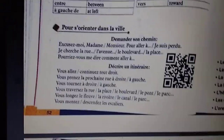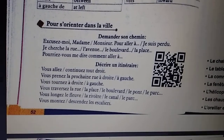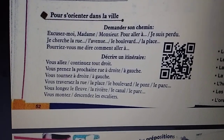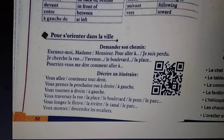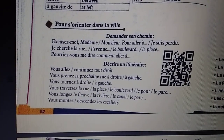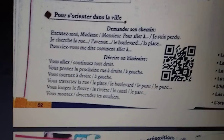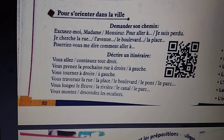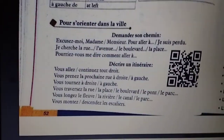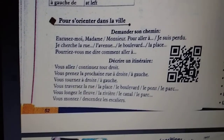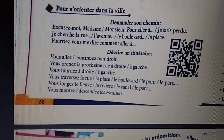This is the next part after the prepositions — how to ask for directions if you are going somewhere and don't know the way. How will you ask in French? Excusez-moi, madame, monsieur, pour aller là — je suis perdu. Excuse me, madam or sir, to go to... I am lost. Je cherche la rue, l'avenue, le boulevard, la place. I am looking for the street, avenue, boulevard, and the place. Pouvez-vous me dire comment aller là? Could you please tell me how to go to the station, for example?